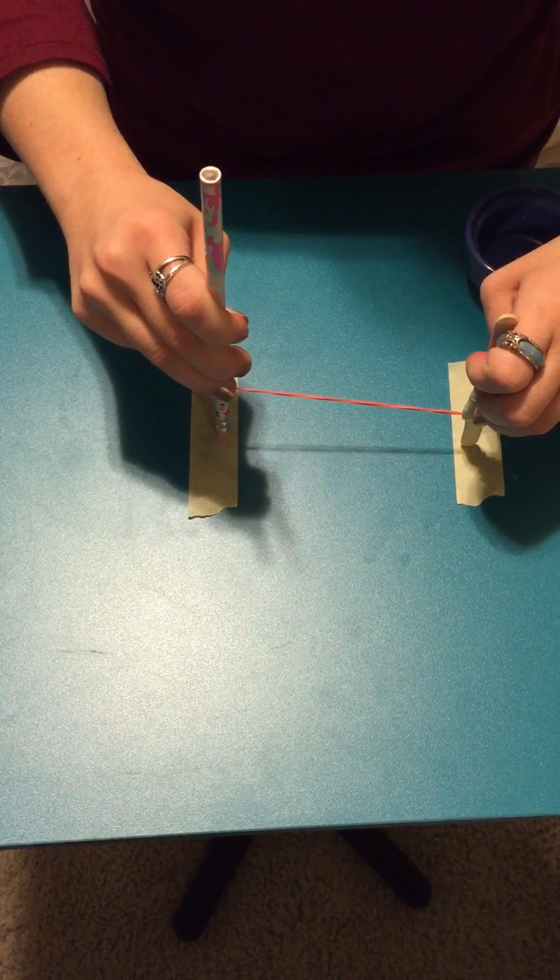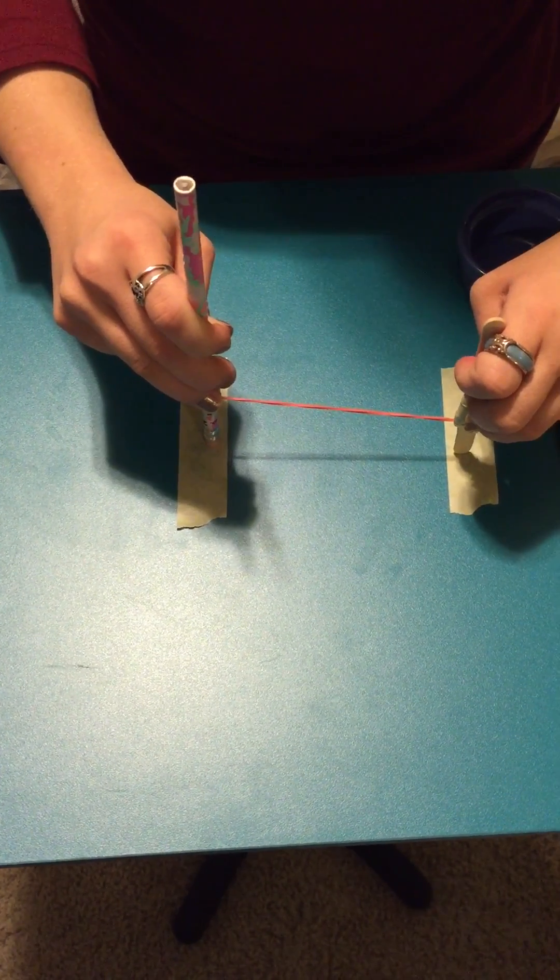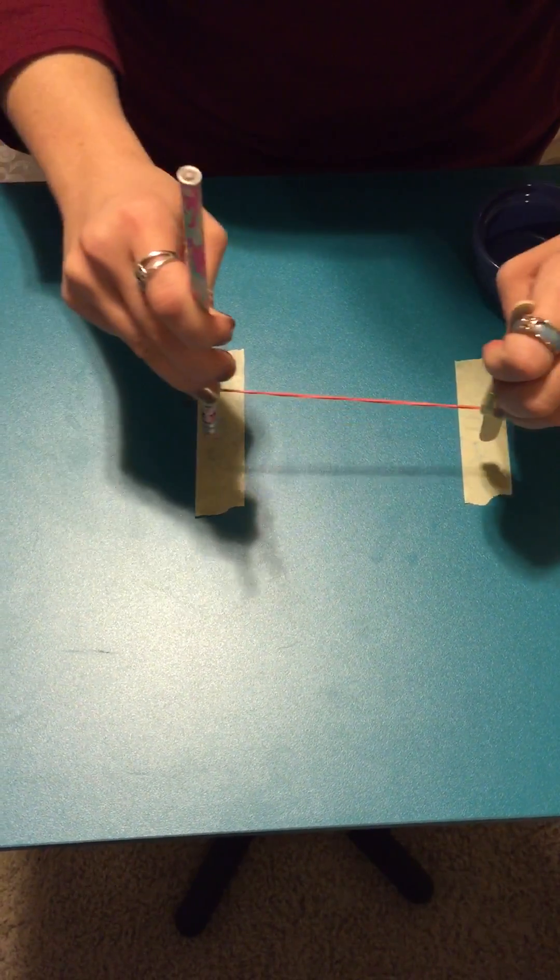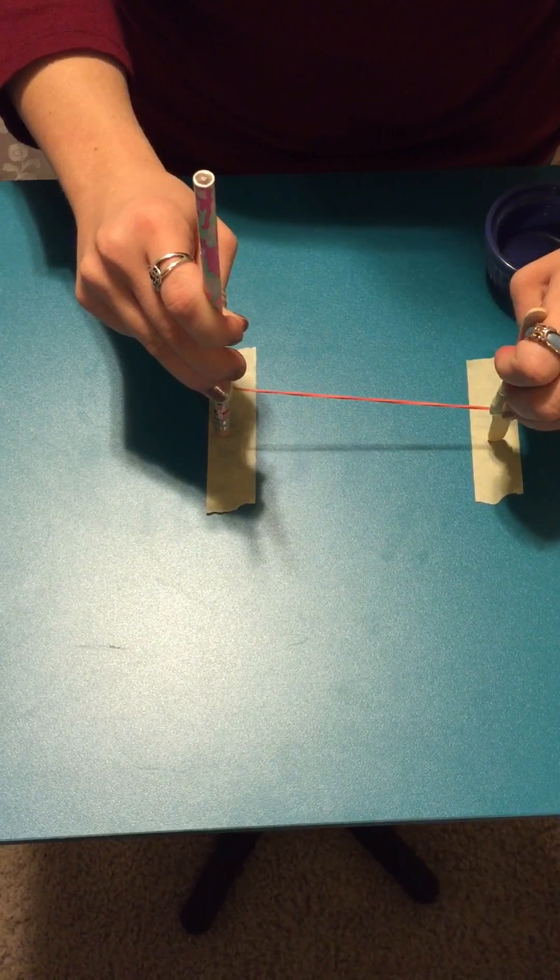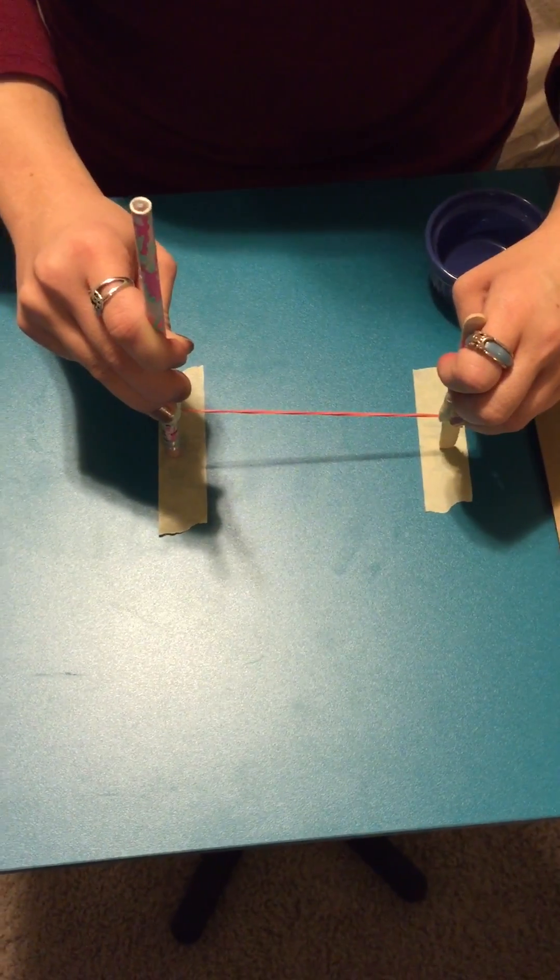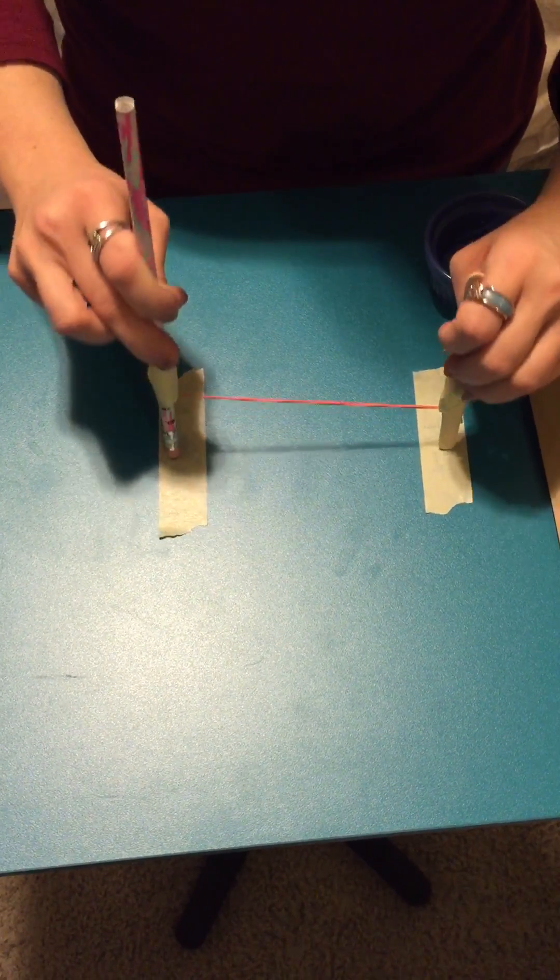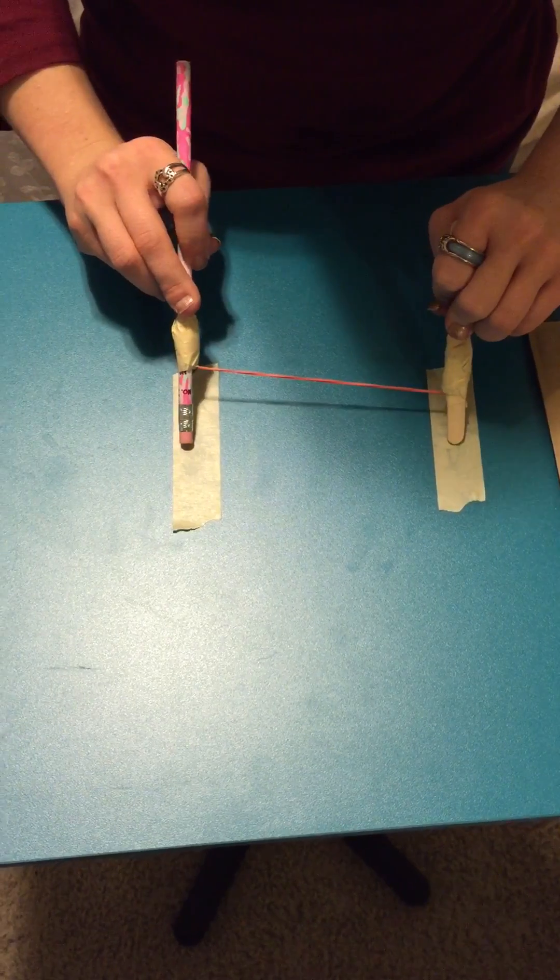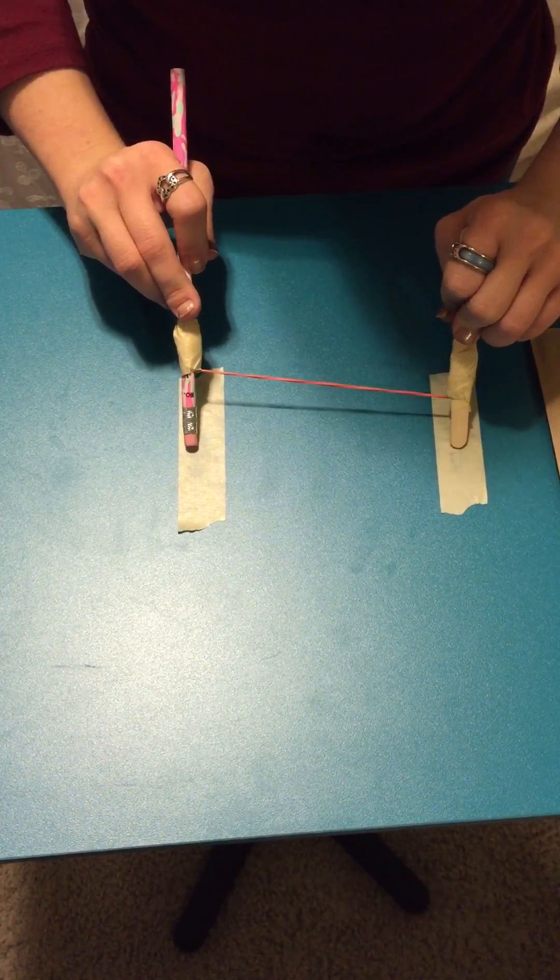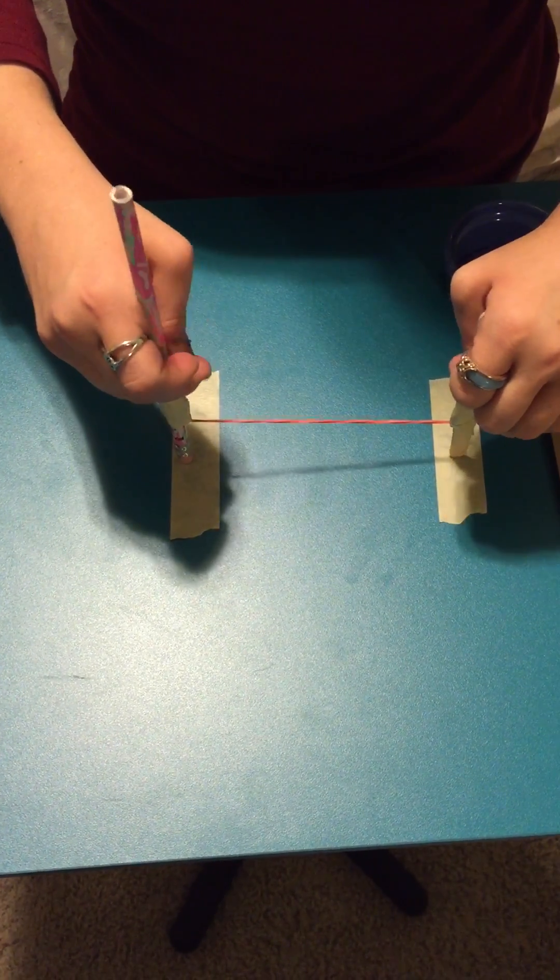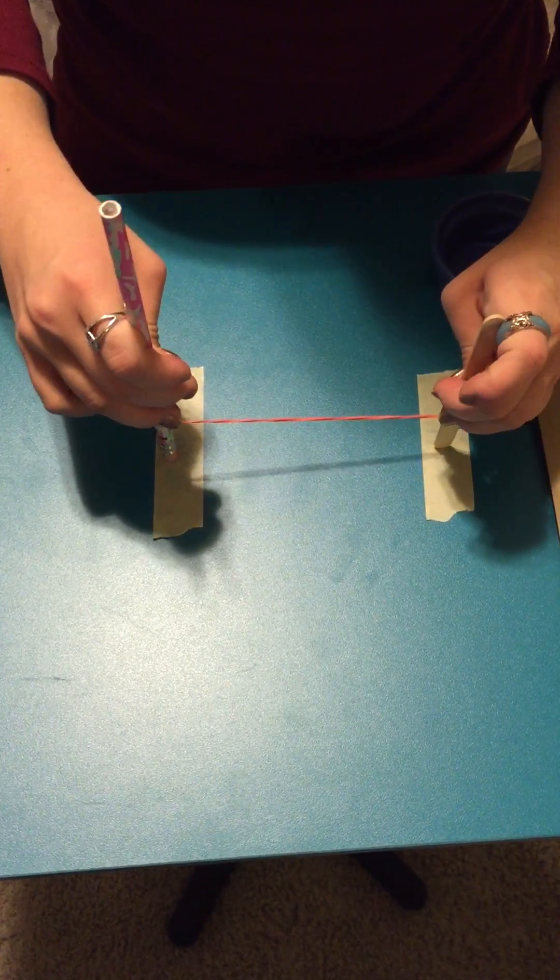This is not how we are going to change the tension for this project. This is actually changing the length and we want to make sure that we are seeing how tension affects pitch. In order to do that, it's important to make sure that your items stay on the masking tape on your surface. They should not move from the spot that you put them in.